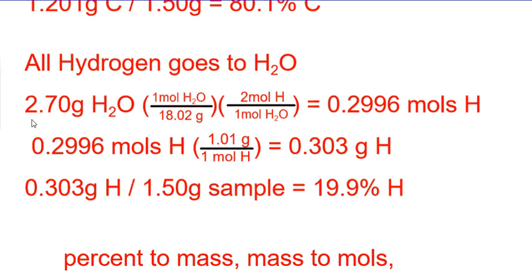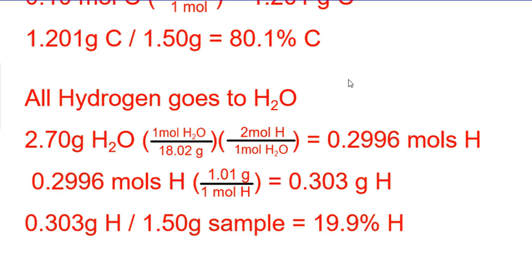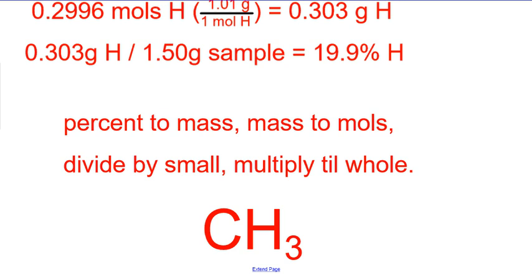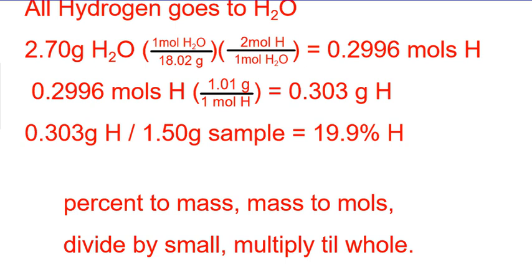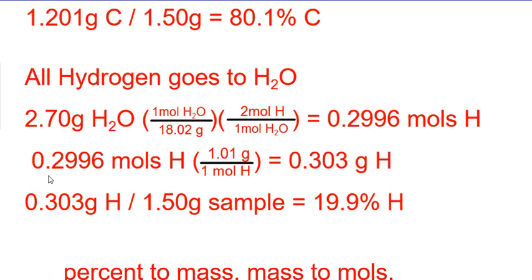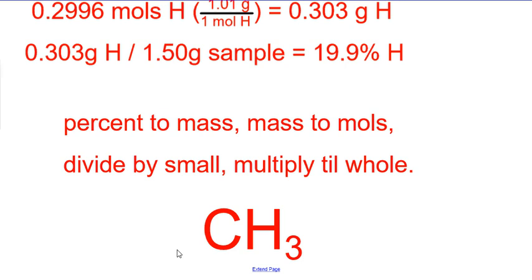Since this is a hydrocarbon, all hydrogen goes to water. Grams of water to moles of water to moles of hydrogen gives us grams of hydrogen divided by the sample mass, yielding the percentage. These two percentages add up to 100%, so there's nothing else in the sample — it's just 80.1% carbon and 19.9% hydrogen. From there it's a normal empirical problem: percent to mass, mass to moles, divide by small, multiply to a whole. That gives 80.1 grams of carbon and 19.9 grams of hydrogen — converting to moles, dividing by the smallest, and the empirical formula is CH3.